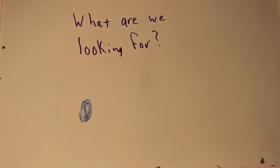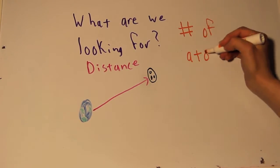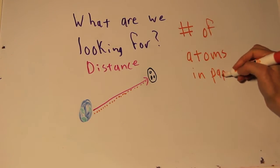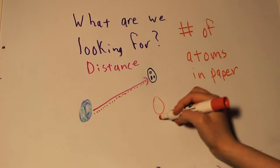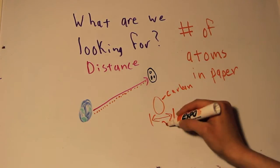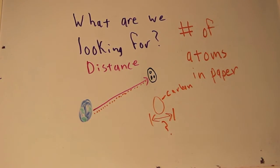To solve this problem, we will have to figure out what we're looking for. We need to know the distance the piece of paper would cover if individual atoms were stacked on top of each other. We need to calculate how many atoms there are to stack. For simplicity, let's assume the paper is made of just carbon. We will also need to look up the diameter of a carbon atom.